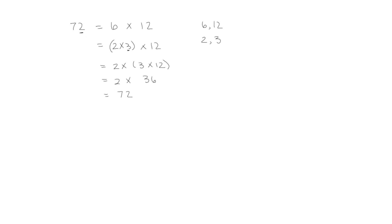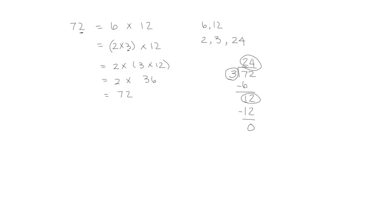I could have told that 2 was a factor right away because there's that even number in the ones place. I could also show it with division: 3 dividing 72. I have 7 tens — I put 2 in each group, using 6 tens with 1 left, plus the 2 ones. I can divide 12 into groups of 3 with 4 in each group with 0 remainder. So that tells me that 24 is also a factor of 72, because 24 times 3 equals 72.